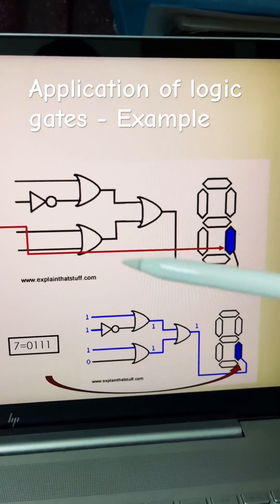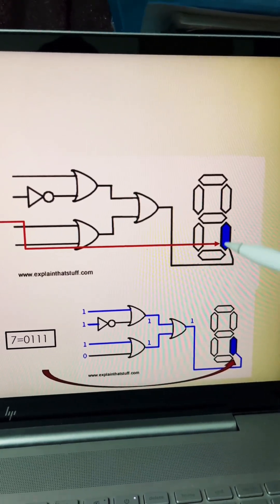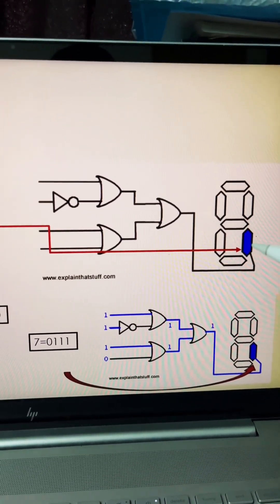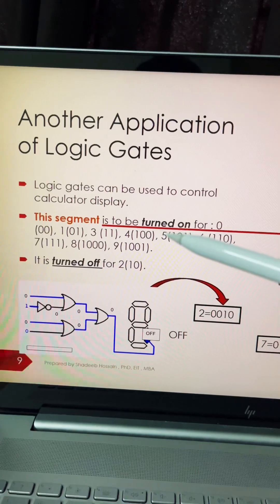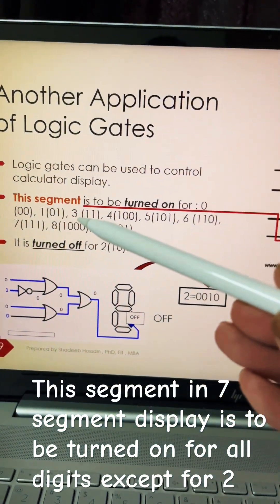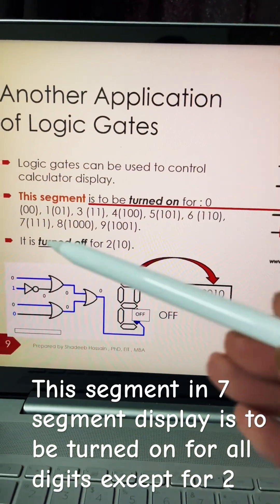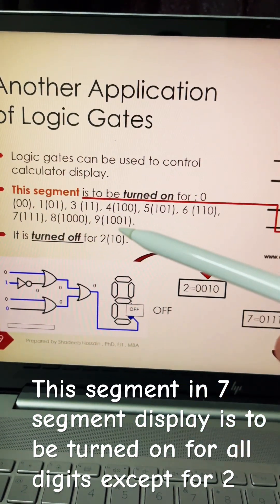Let's look into an example of a 7-segment display. This segment, particularly in a 7-segment display, would be turned on for only 0, 1, 3, 4, 5, 6, 7, 8, and 9.